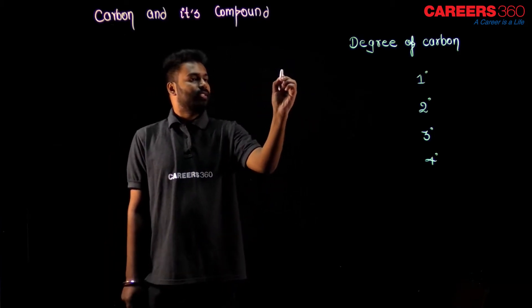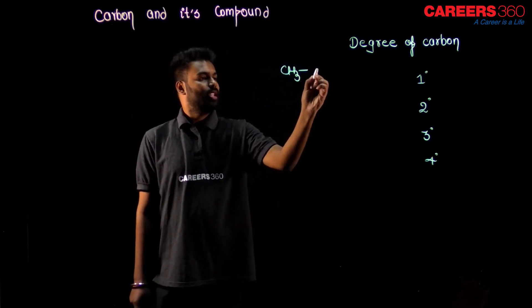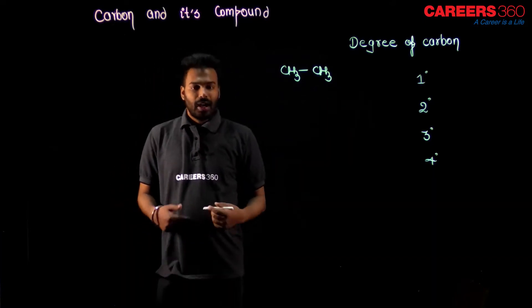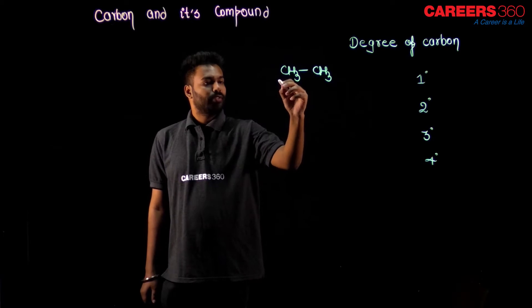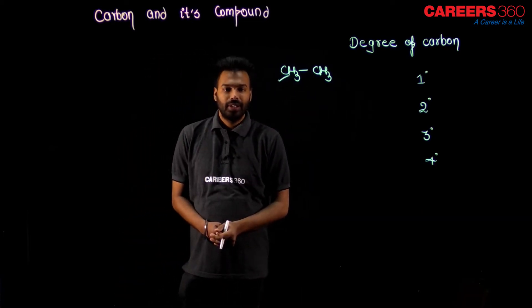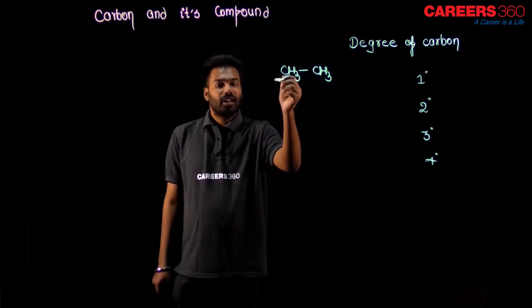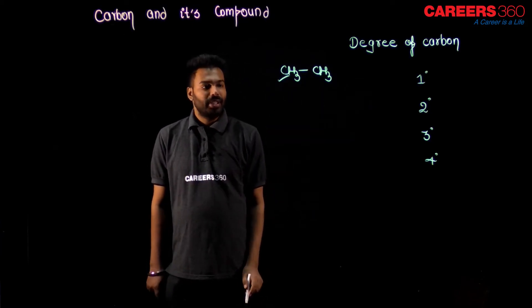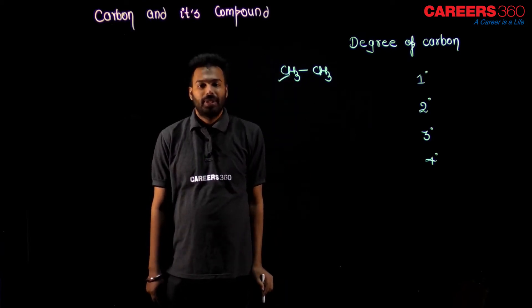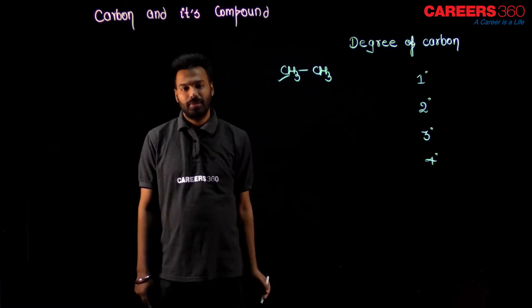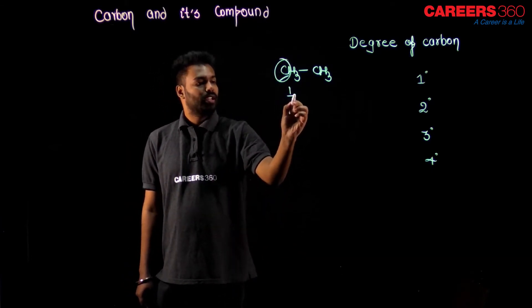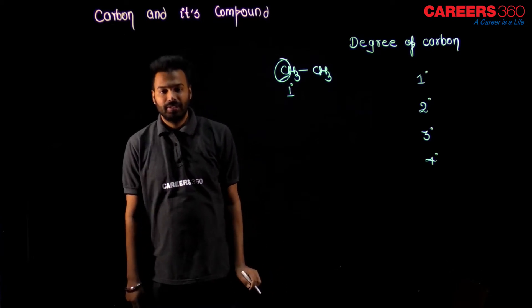Suppose I write CH3 CH3. In CH3 CH3, I want to know the degree of this carbon. It is very simple — how many carbons are connected to this carbon? Only one carbon is touching this carbon. So this particular carbon is one degree carbon, or primary carbon.